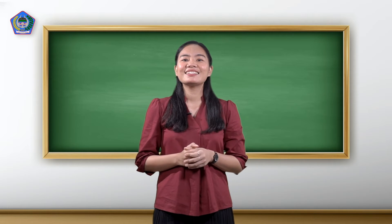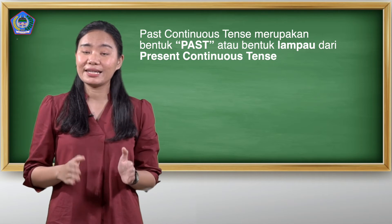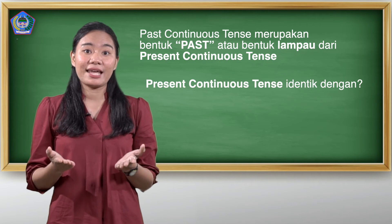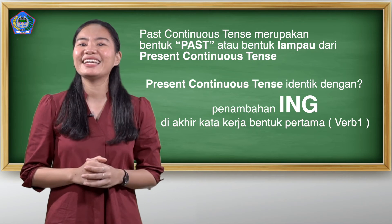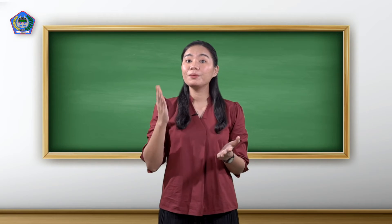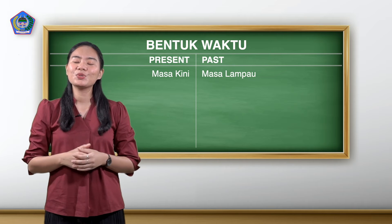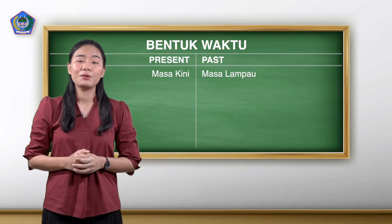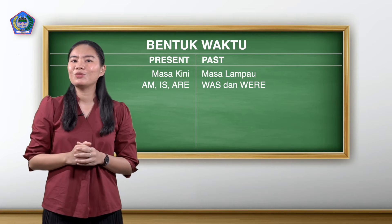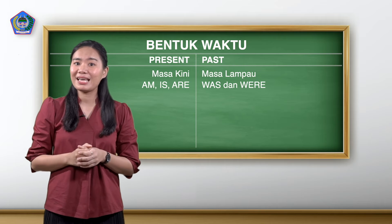Before we go to the formula, this is how to make it easier to understand. Past continuous tense merupakan bentuk past atau bentuk lampau dari present continuous tense. Masih ingat kan? Dengan rumus dan aturan present continuous tense — present continuous tense identik dengan penambahan -ing di akhir kata kerja bentuk pertama atau verb one. So does past continuous tense. Namun perbedaannya ada pada bentuk waktu: present atau masa kini dan past atau masa lampau, dan juga to be yang digunakan. Present continuous tense menggunakan am, is, are, dan past continuous tense menggunakan was and were. Yang sudah lupa atau belum tahu penggunaan was and were untuk setiap subjek, ikut kelas sebelumnya tentang past simple tense dulu ya.